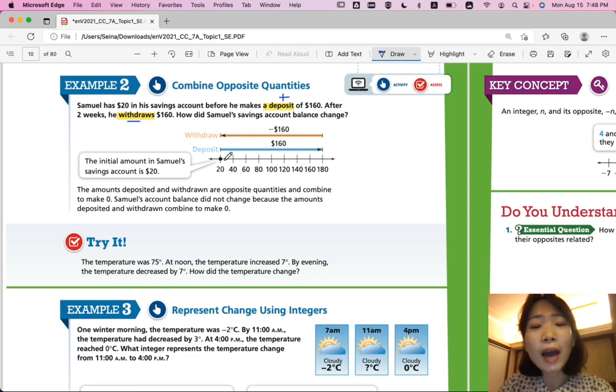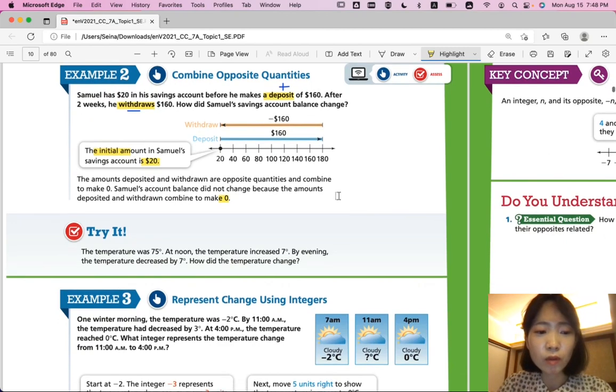So from $20, he adds $160. After two weeks, he withdraws $160 again. So he's going to be back to $20. So the initial amount is $20. And the change should be zero. Because at the end, he will also get $20.